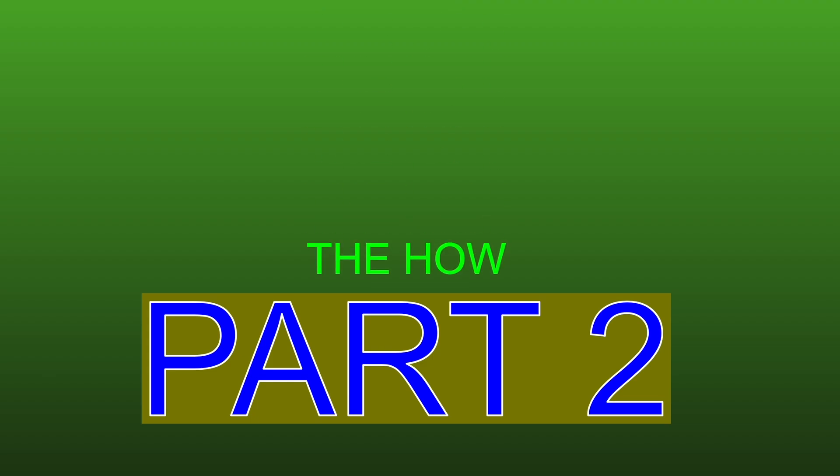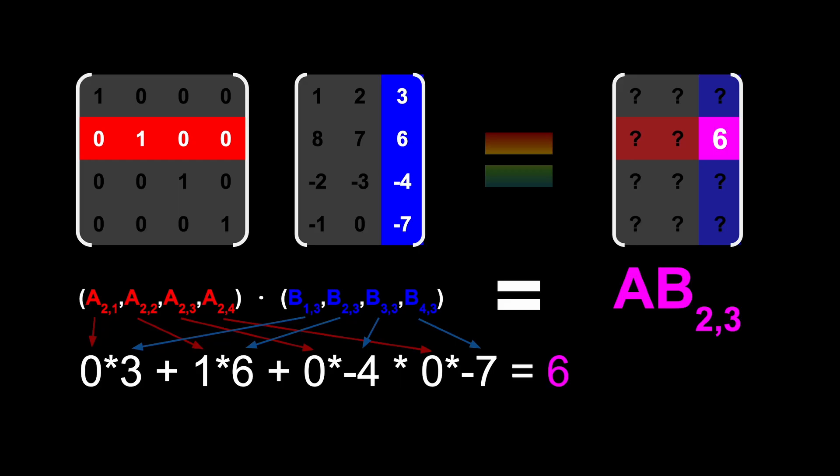Matrix multiplications are made up of many smaller operations known as dot products. In any product matrix AB, for example, entry i,j is equal to the dot product of the index i row of A and the index j column of B, meaning that AB has the same number of rows as A and columns as B.